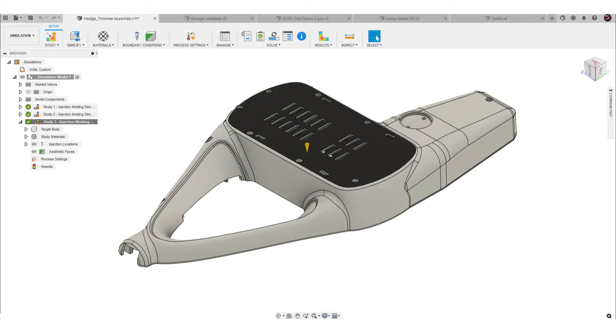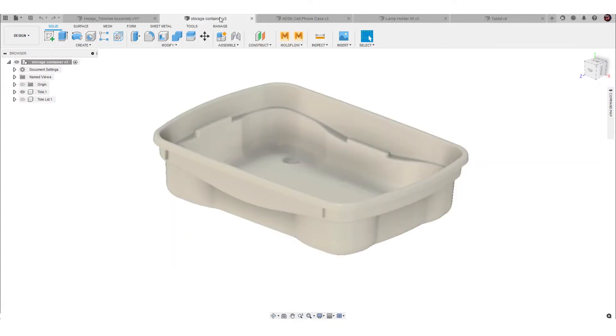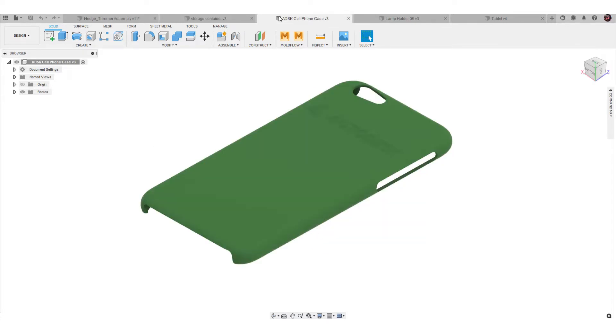Injection molding is a common manufacturing process used to produce high-volume plastic parts. Everyday items such as food storage containers, cell phone cases, automotive parts, and housings are all manufactured using injection molding.